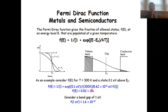A typical semiconductor would have a band gap of approximately one electron volt. If you insert one electron volt instead of 0.1 electron volt, you see that the fraction of populated states one electron volt above the Fermi level will be extremely small — only 1.6 times 10 to the minus 17.